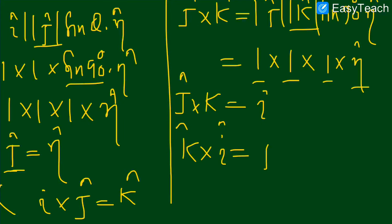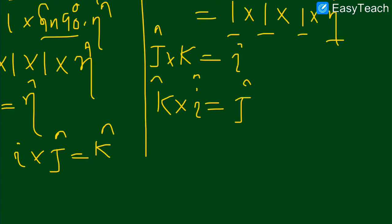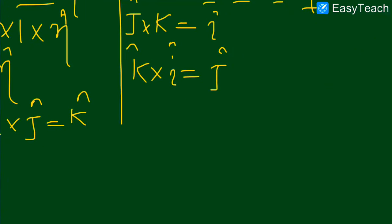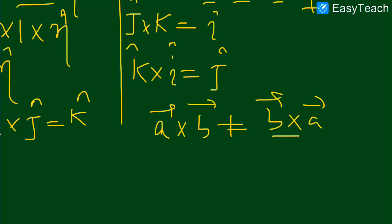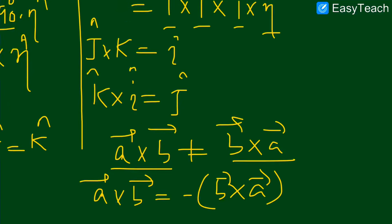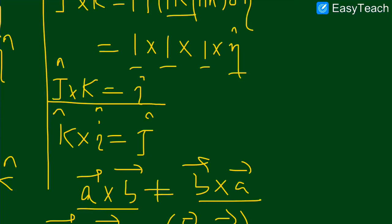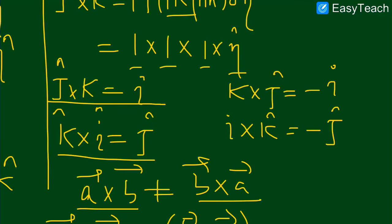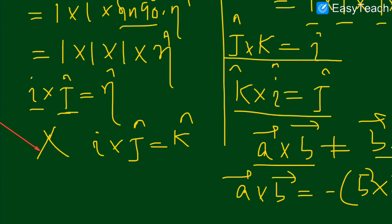Dear students, if we take the cross product in reverse order — cross product is not commutative, yani A cross B is not equal to B cross A. The relation between them is: A cross B is equal to minus times B cross A. For example, J cross K is I, so K cross J will be equal to minus I. And I cross K will be equal to minus J.